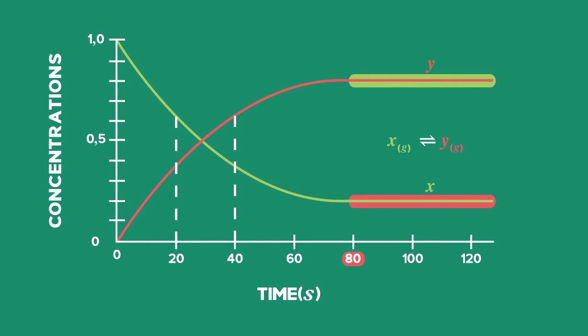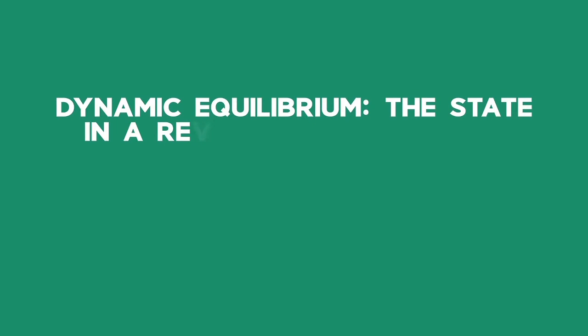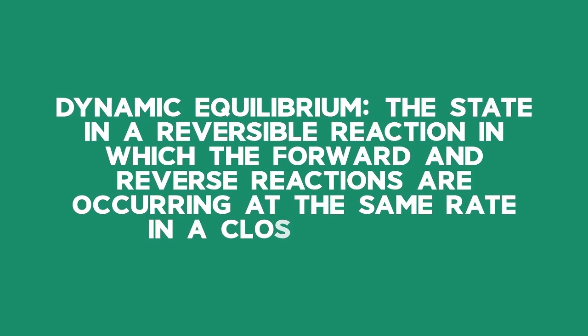So in summary, dynamic equilibrium is the state in a reversible reaction in which the forward and reverse reactions are occurring at the same rate in a closed system.